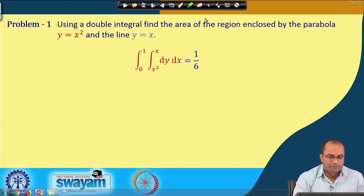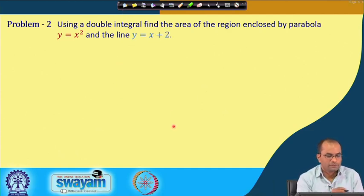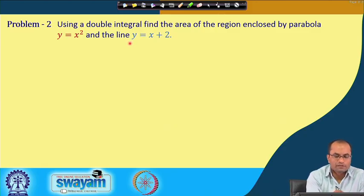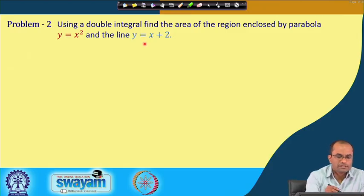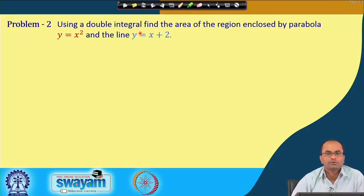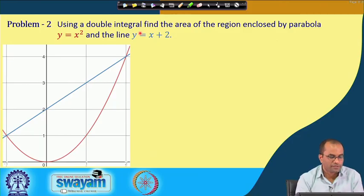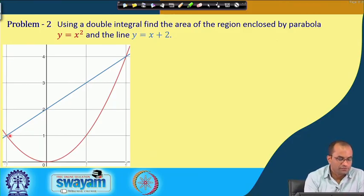We will take another slightly more complicated example. Instead of y = x, we now have the line y = x + 2. So again we have one parabola and a line, this time y = x + 2, which has y-intercept at 2.